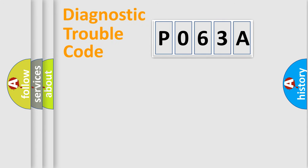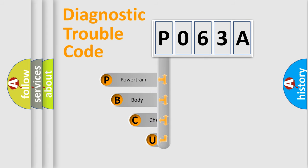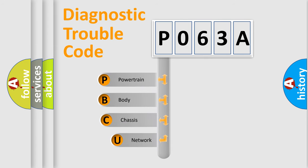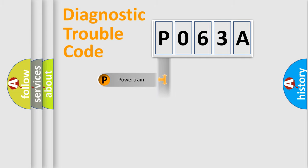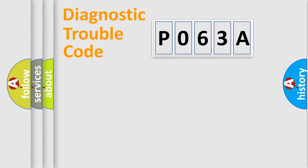First, let's look at the history of diagnostic fault code composition according to the OBD2 protocol, which is unified for all automakers since 2000. We divide the electric system of an automobile into four basic units: Powertrain, Body, Chassis, and Network.